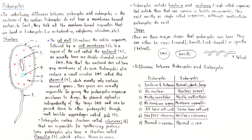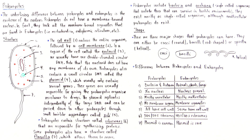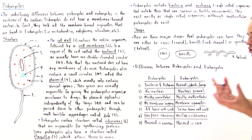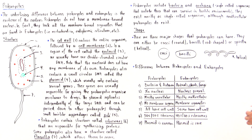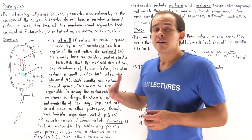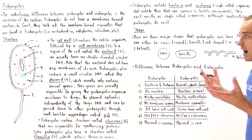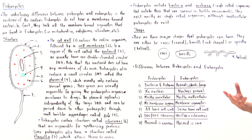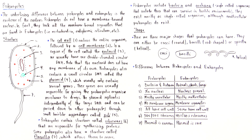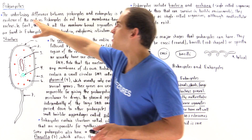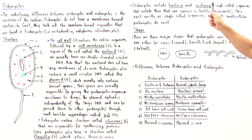Prokaryotic organisms include two types of domains: bacteria and archaea. Archaea are single-celled organisms that include those capable of living in very harsh and hostile environments, such as very hot temperatures, very high or very low pH, very high acidity, very salty conditions, and so forth. Those organisms that can live in very hostile environments usually fall into the domain known as archaea. So prokaryotes consist of bacteria and archaea.